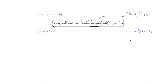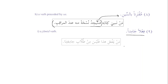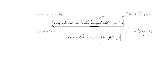Number nine: fa'il jamid — the jawab al-shart should be a fa'il jamid. What is fa'il jamid? Words like laysa and 'asa that have only the past tense and no present or amr. 'Man yaf'al hadha fa-laysa min tullabi jami'atina' — whoever does this is not among the students of our university. Laysa is fa'il jamid, so jawab al-shart is connected with fa.